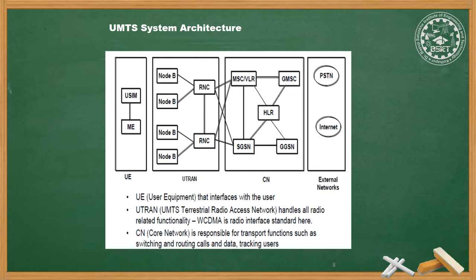This is the architecture of the UMTS system. As you can see, there are different interfaces. User Equipment (UE) interfaces with the user. Then UTRAN — the UMTS Terrestrial Radio Access Network — handles all radio-related functionality, and WCDMA is the radio interface standard here. Core Network (CN) is responsible for transport functions such as switching and routing calls and data, and tracking users. The four main components are: UE, UTRAN with WCDMA standard, core network, and external networks.